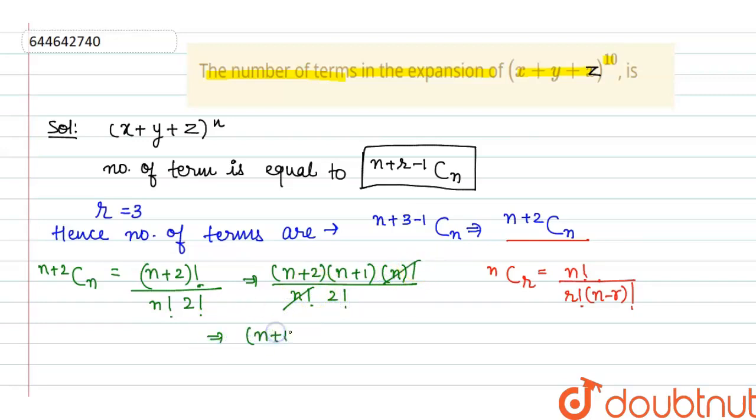I can write it, n plus 2 into n plus 1 upon factorial 2, factorial 2 can be written as only 2. Now, in the question, the value of n is 10.